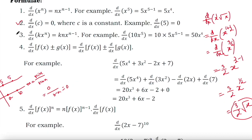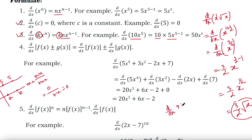Formula 3: the derivative of k times x to the power n. If you have a constant multiplied by x to the power n, the constant just stays and does not affect the process. For example, the derivative of 10x to the power 5 is 10 times 5x to the power 4, which is 50x to the power 4. Similarly, the derivative of 9x to the power 5 is 9 times 5x to the power 4, which is 45x to the power 4.